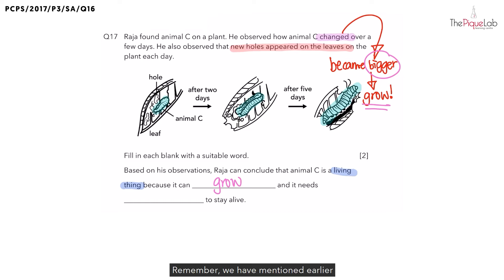Remember we mentioned earlier that animal C is a living thing? If there are more and more holes on the leaves over the next few days, this must mean that animal C is eating the leaves as food. So what can you tell me about animal C? Based on this, you can tell me that animal C needs food to stay alive.